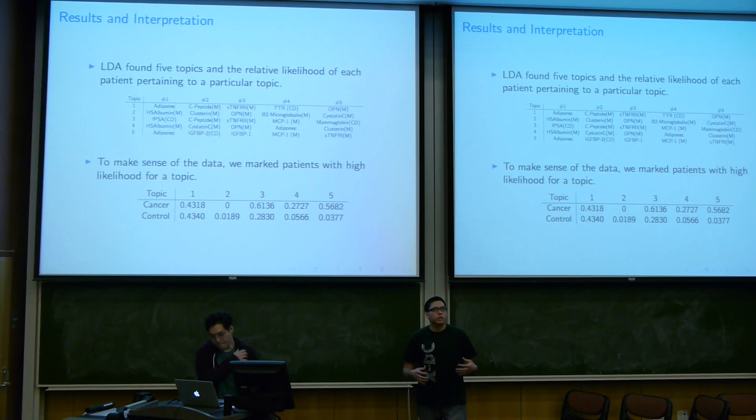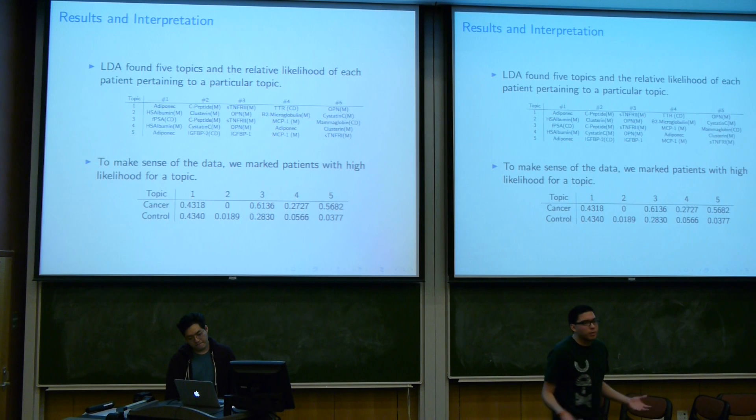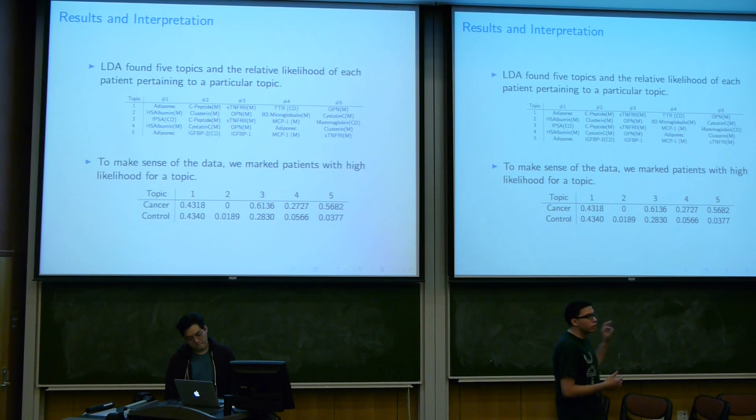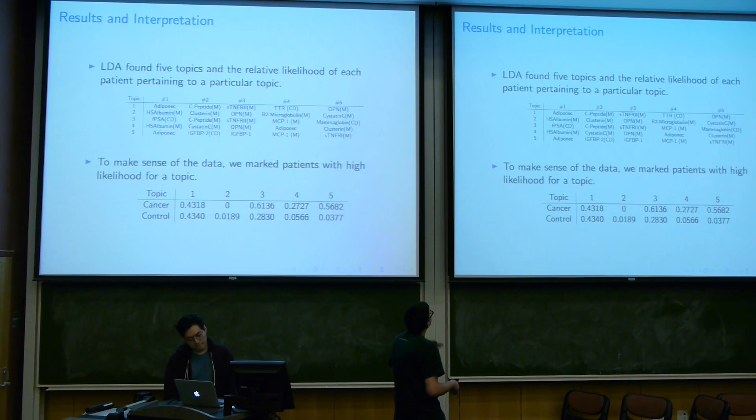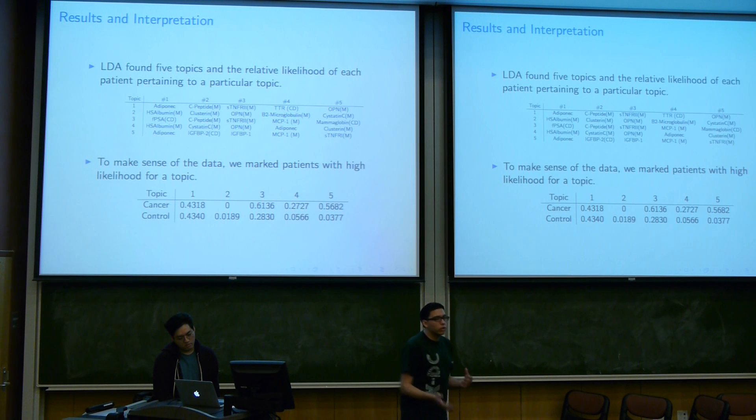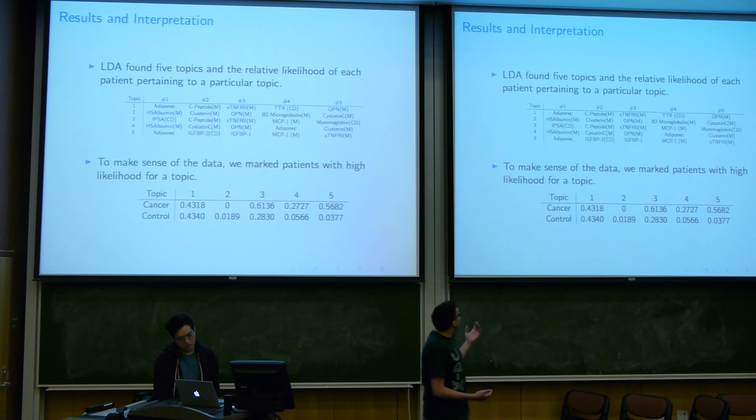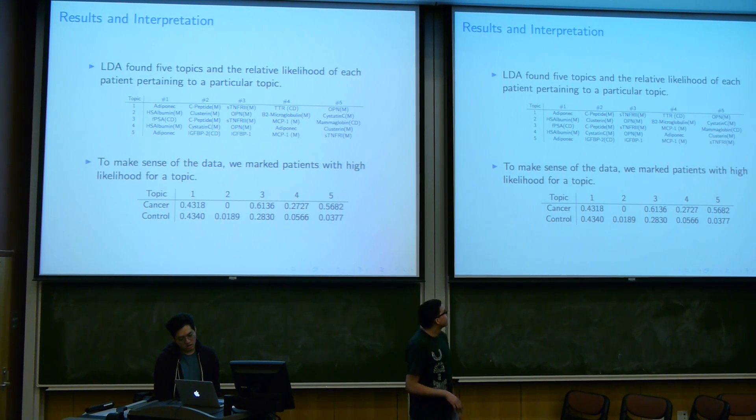Here are the results. We ran LDA and asked it to infer five topics from our set of biomarkers. LDA also outputs likelihood for each patient exhibiting a particular topic. We went through and marked each patient that had a high likelihood for a particular topic. The first two topics do very little to differentiate cancer patients from control patients. The first one, you're equally likely to have it if you're a cancer patient or a control patient, and that probably just corresponds to some biological process that's naturally occurring. The second one, there's only one patient in the control group that has that topic. That's probably due to noise in the data.